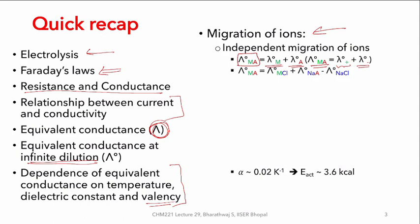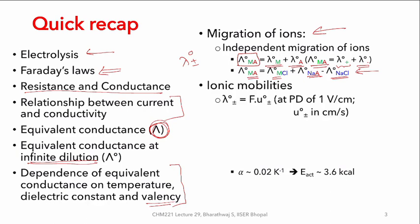That may not always be the case where the λ° of the ions are already known, so one can resort to another methodology where stable salts could also be used for a given electrolyte. Following this we took a look at ionic mobilities, and with a simple deduction we were able to realize that ionic conductance is directly proportional to ionic mobility for a given equivalent of a substance when one volt per centimeter of potential difference is applied.